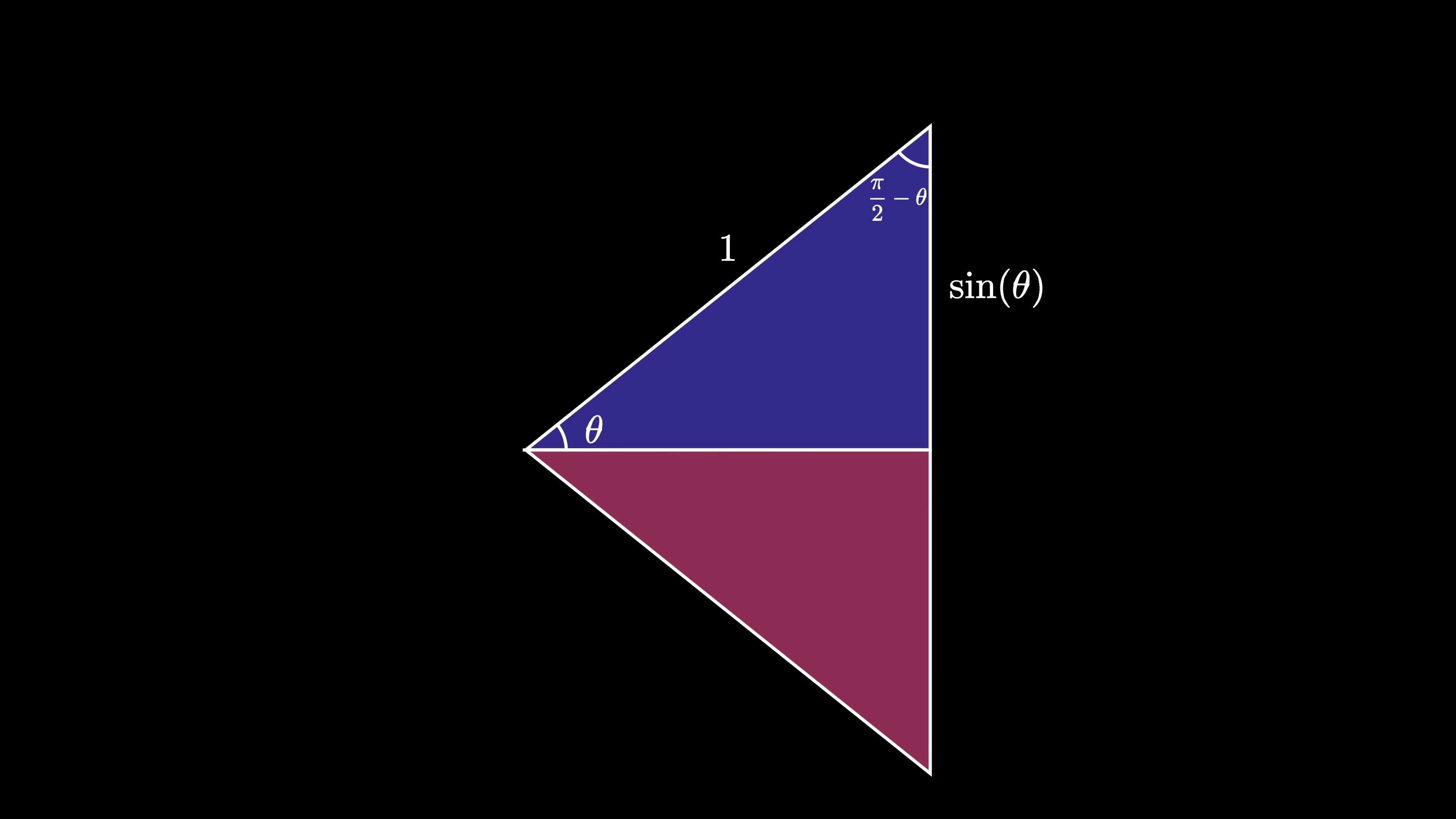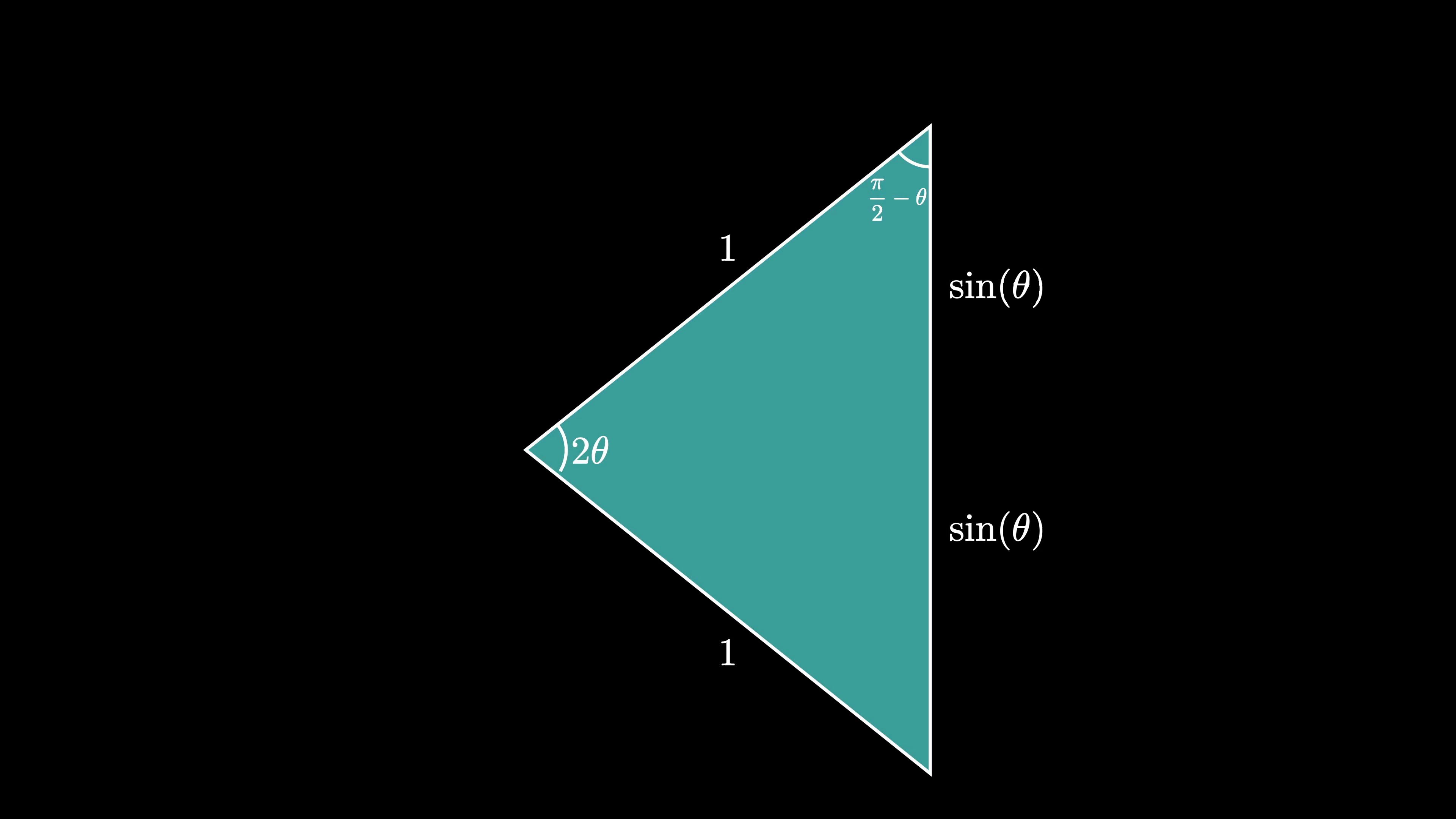We can take a second copy of this triangle and reflect it, creating a larger isosceles triangle as shown here. This triangle has an angle 2 theta, and the opposite side length is then 2 times the sine of theta.